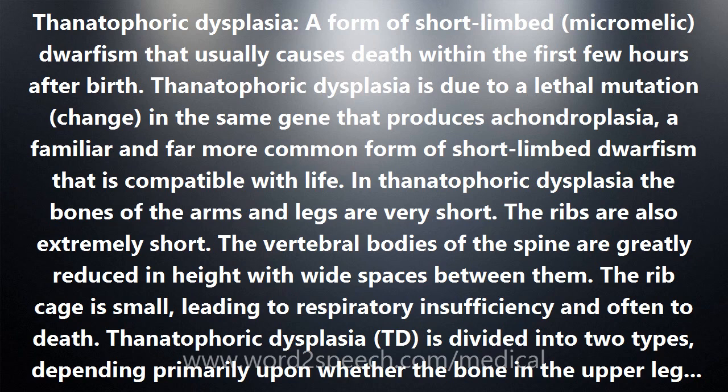In thanatophoric dysplasia, the bones of the arms and legs are very short. The ribs are also extremely short. The vertebral bodies of the spine are greatly reduced in height with wide spaces between them. The ribcage is small, leading to respiratory insufficiency and often to death.